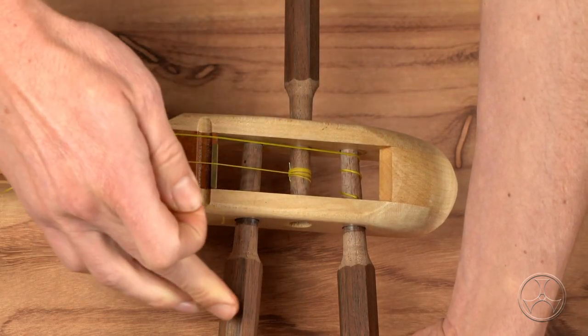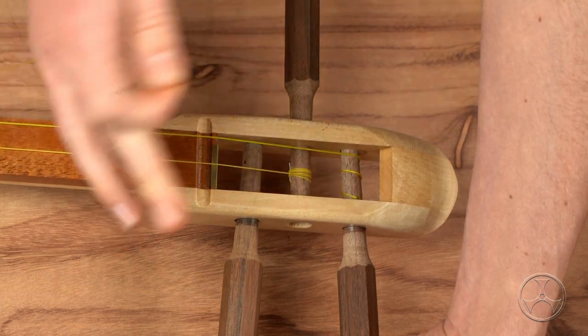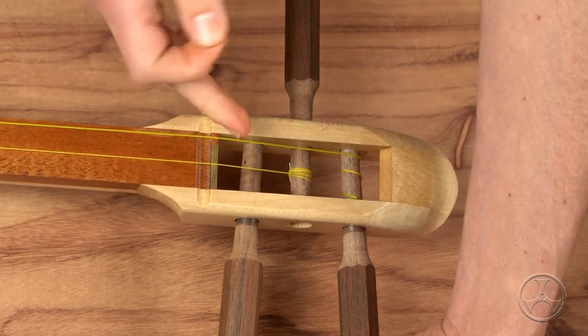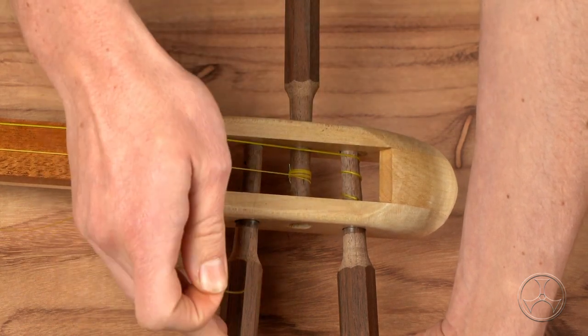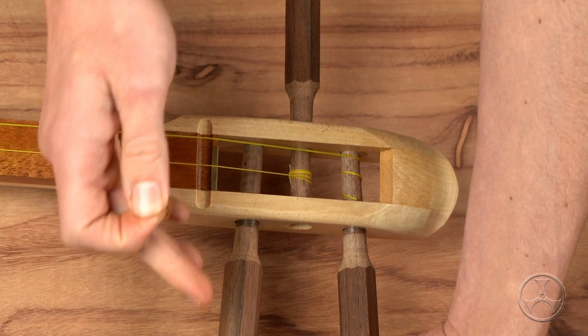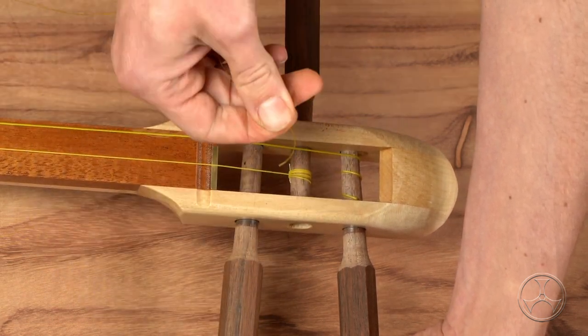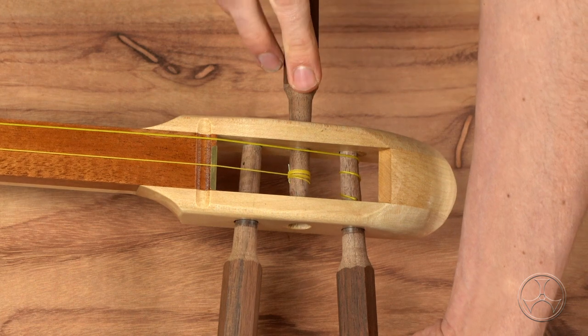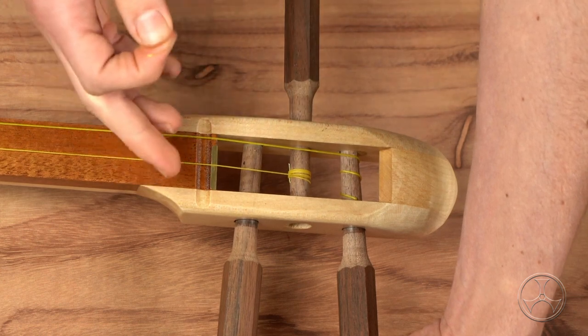Today we're putting the san no ito on the lower itomaki. Keep in mind though that there's two different stringing styles. The ni no ito goes on the middle itomaki, san no ito goes on the lower itomaki. The other style is where the ni no ito goes on the lower, san no ito goes in the middle. It's purely style aesthetic. One isn't better than the other.